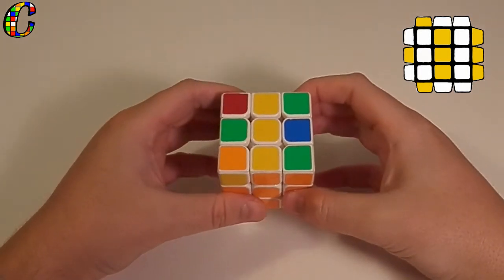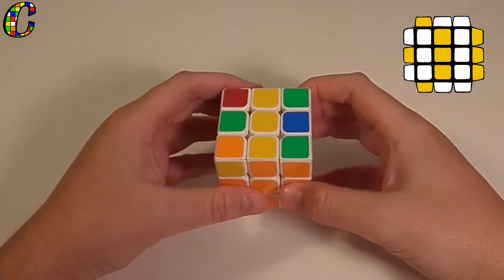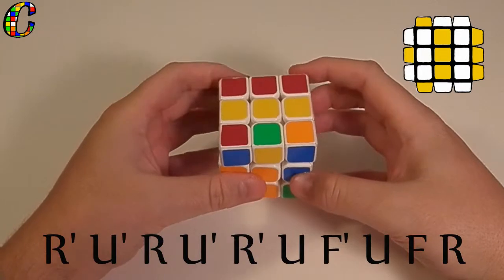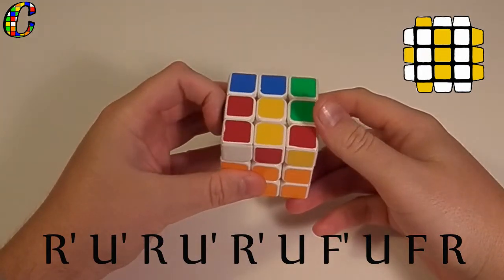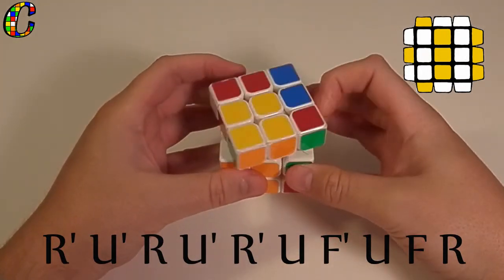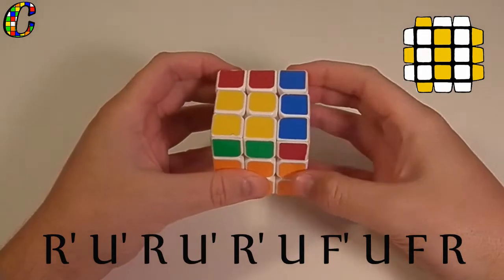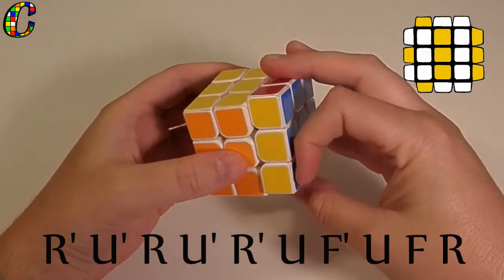you want to hold the cube like this and do the following algorithm. R prime, U prime, R, U prime, R prime, U, F prime, U, F, R.